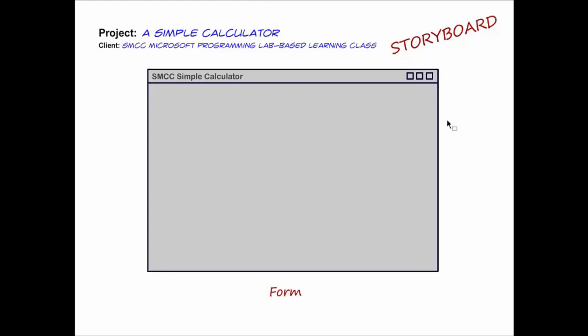Here's a typical storyboard. I'm going to start with the window itself drawn out. We call this in terms of Microsoft Visual Studio a form. That's the object that it is, the type of class it is. It's a form object. It's going to have a title bar, a minimize button, a maximize button, and a close button. Typical of all windows within Microsoft Windows.